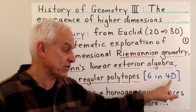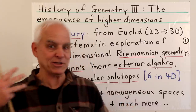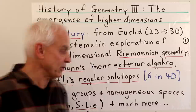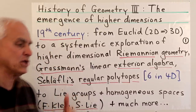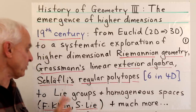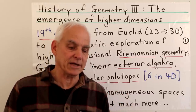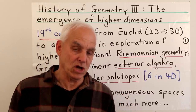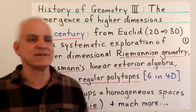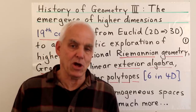Ludwig Schläfli's investigation of regular polytopes going beyond the five Platonic solids — he started looking at corresponding objects in higher dimensions. He discovered, for example, that there were six regular polytopes in four dimensions; three of them are analogues of those in three dimensions, but there are three new ones which are quite interesting. And then we come to a whole range of new developments centered around Felix Klein and Sophus Lie, having to do with Lie groups, homogeneous spaces, and groups of symmetries interacting with geometry.